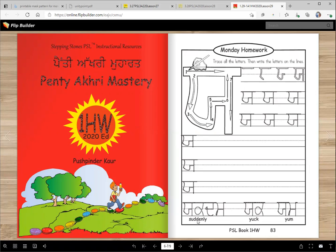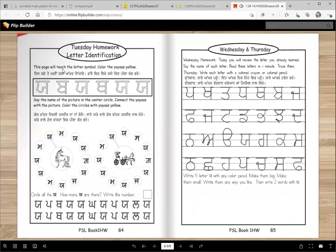This page will teach the letter symbol. Color the yayas yellow. So find all the yayas here, they will be yellow. Say the names of the pictures in the center circle, right here. Connect the yayas with the picture. Color the circles with yaya yellow.